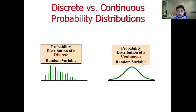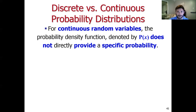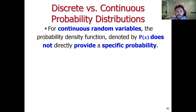Before we get into it, one of the most important things to discuss has to do with how we interpret the value of the probability function. We've been using a few different types of notation to refer to this function — sometimes p(x), other times f(x). In either case, we have to be careful how we interpret this. When we had a discrete random variable, the probability function told us the specific probability associated with observing the event x.